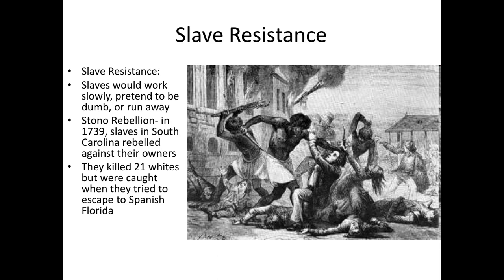Any time there was a slave rebellion, it would convince slave owners that the slave codes were not strict enough. So every time a rebellion was put down, the slave codes became stricter — for example, slaves were not allowed to learn how to read and write, because keeping them ignorant made them less likely to rebel. It is possible for a slave rebellion to be successful, as seen in the Haitian Revolution where slaves overthrew all the masters on the entire island. Slave owners were aware of this and got stricter over time.